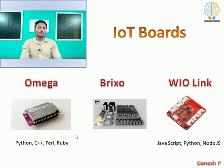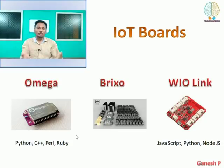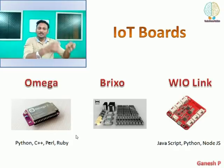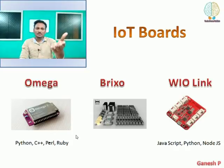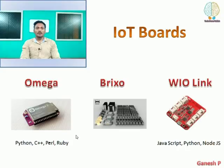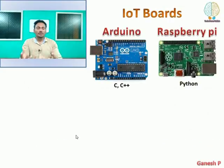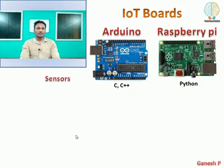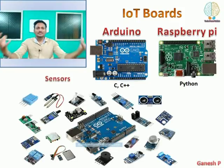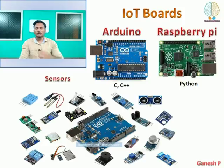There are a lot of boards available for IoT. You can use Omega. You need a clear understanding of C++, Pearl, and Ruby, or you can use a brick. In the current scenario, you can make use of Arduino or Raspberry Pi if you have a clear understanding of C and C++. There are 47 sensors available for Arduino and Raspberry Pi — you can enjoy and learn a lot in IoT.